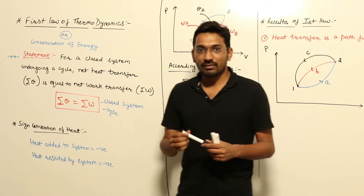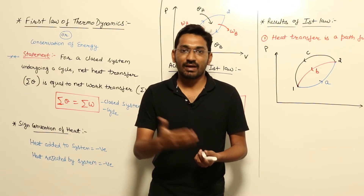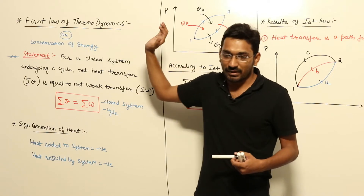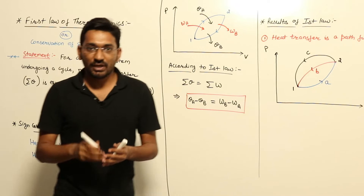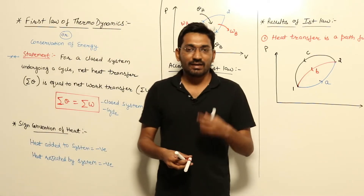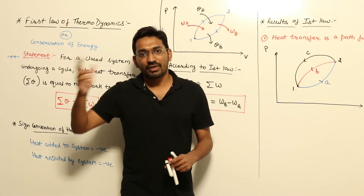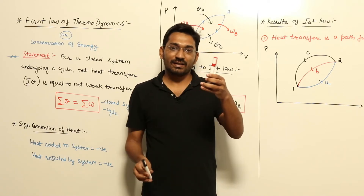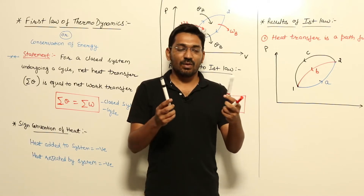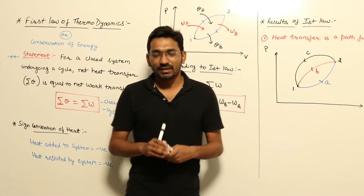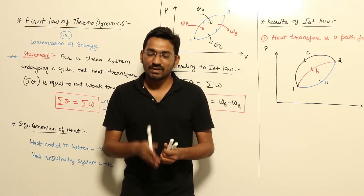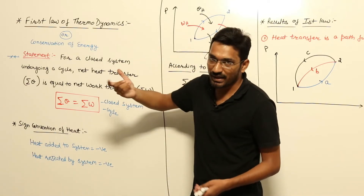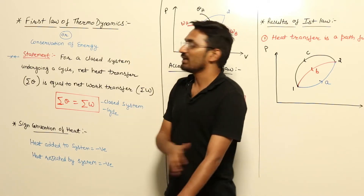After covering the chapter of energy and energy interactions — work interaction and heat interaction — our next chapter of thermodynamics is the first law of thermodynamics. We already studied the zeroth law of thermodynamics, which gives us the concept of temperature and the concept of the thermometer. Now we are going to study the first law of thermodynamics, also known as conservation of energy.